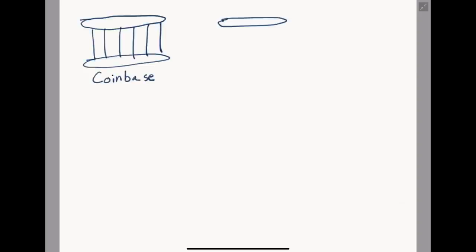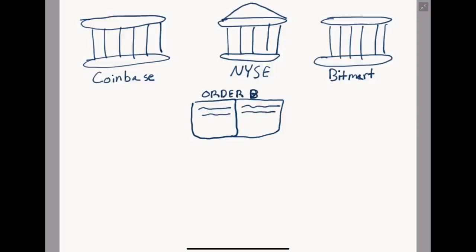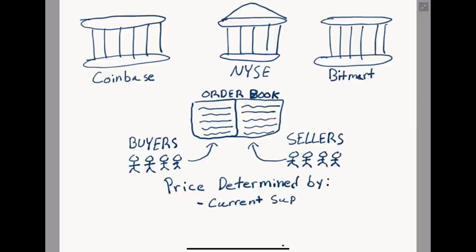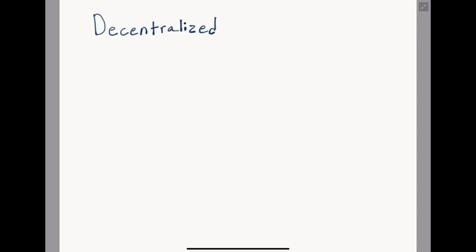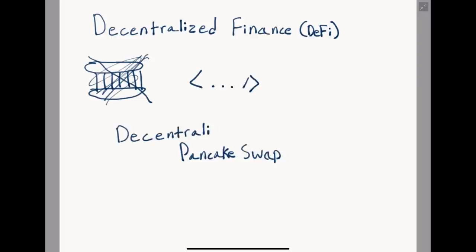Market makers such as Coinbase, the New York Stock Exchange, or BitMart determine the market of an asset using what's called an order book model, where buyers and sellers come together and place their orders for a particular asset in a large list format. Sellers are trying to maximize profits while buyers are trying to get the best deal. Centralized exchanges algorithmically determine the price of an asset based on current buy/sell orders, historical data, and other factors. With decentralized finance or DeFi, exchanges are not operated by third parties — they must rely on code.